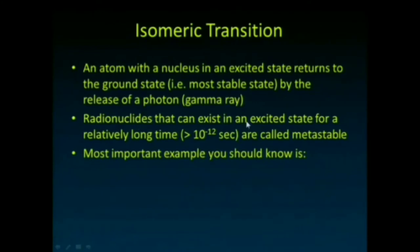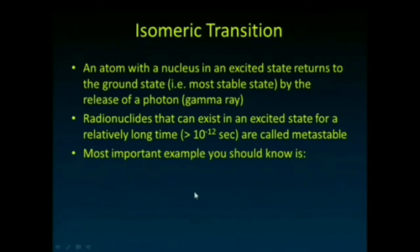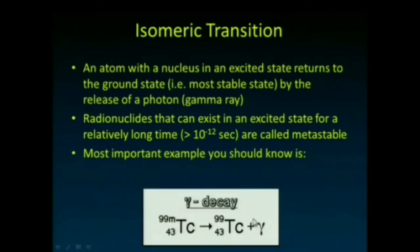Radionuclides that can exist in that excited state for a relatively long time — on the atomic scale, greater than 10 to the minus 12 seconds — are referred to as being metastable. The most important metastable radionuclide that you should know of, which decays via isomeric transition, is technetium-99m. The 'm' stands for metastable.